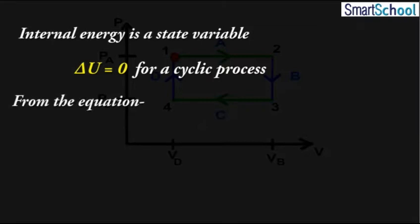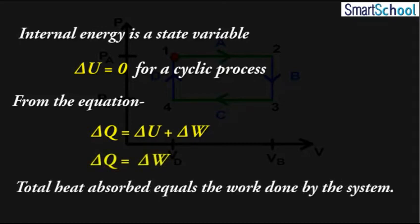From the equation delta Q equals to delta U plus delta W. Since delta U is 0, hence the total heat absorbed equals to the work done by the system.